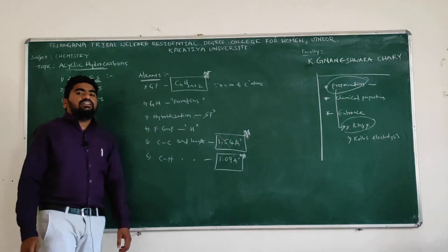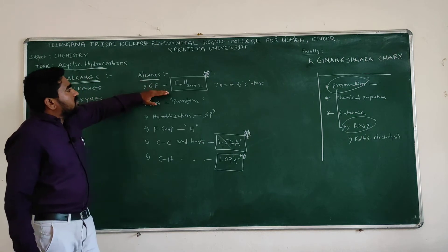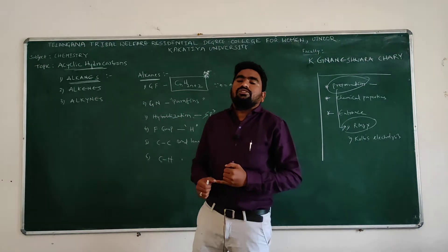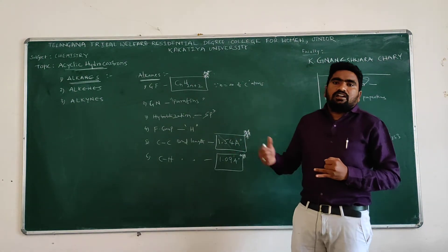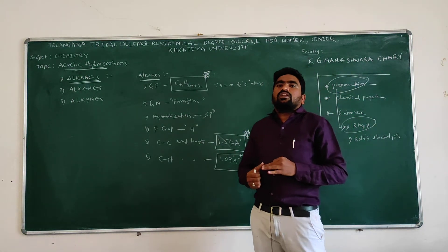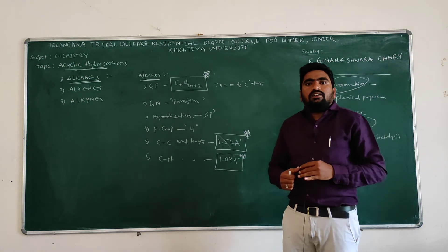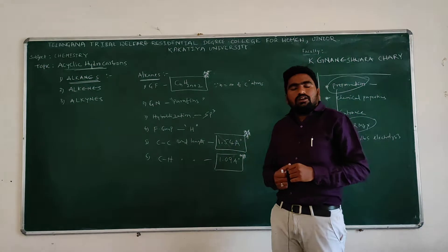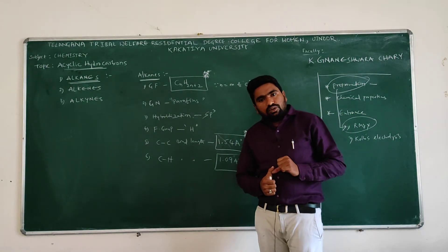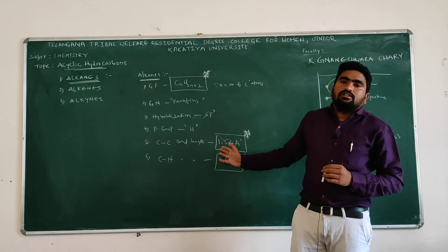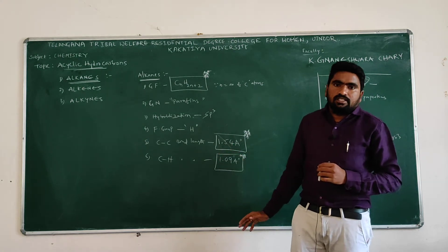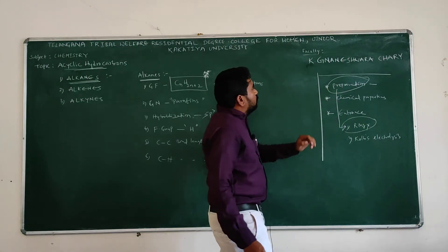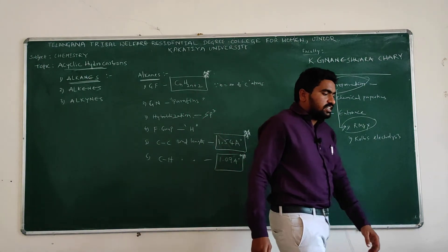These are the fundamentals and they are useful for entrance exams also. The general formula is CnH2n+2, the common name and general name of alkanes is paraffins, hybridization is sp3, functional group is hydrogen, carbon-carbon bond length is 1.54 angstroms, and carbon-hydrogen bond length is 1.09 angstroms. After this, we are going to discuss preparation of alkanes.